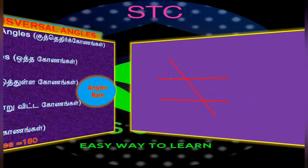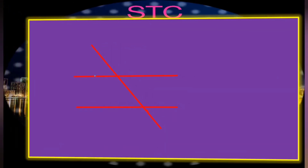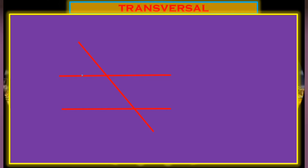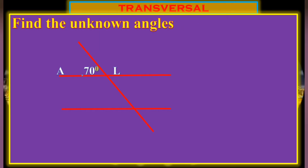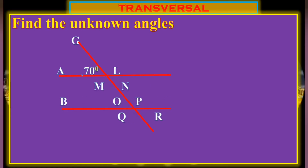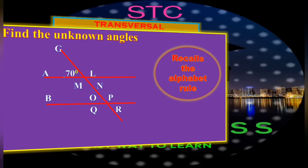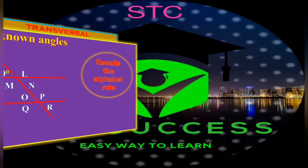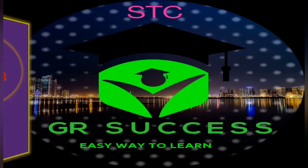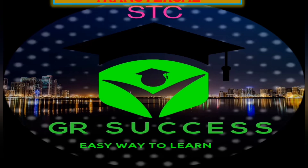The next part is to show you the unknown angles, with A and B parallel. Determine the unknown angles — the given angle is 70 degrees.